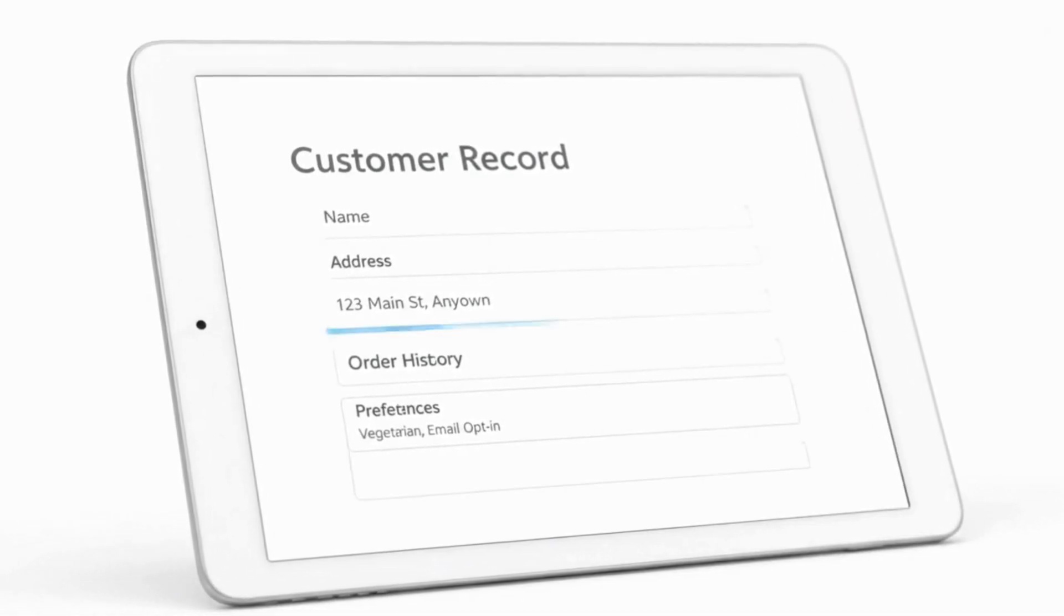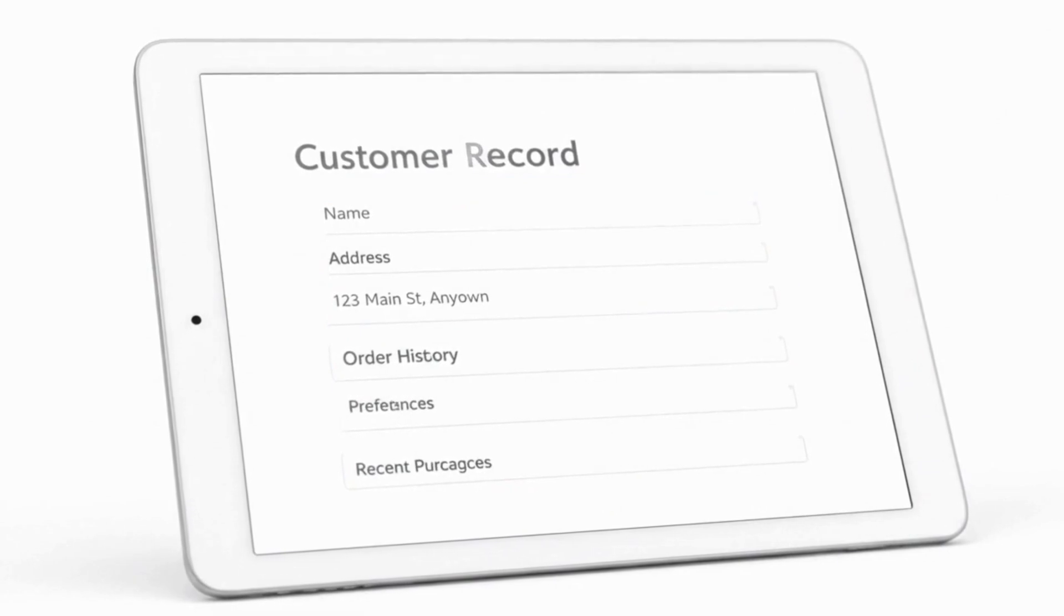For example, a customer record might include their name, address, order history, and preferences, all in one document, kind of like having a complete customer file.